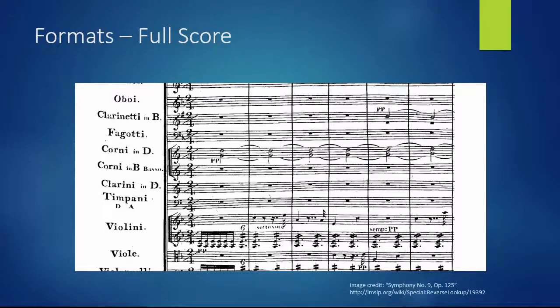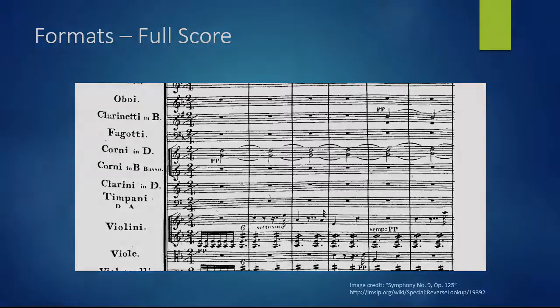A full score displays the complete music of a composition, with each part on a separate staff. Normally, this term applies to scores for ensembles, such as orchestras, bands, or choirs.